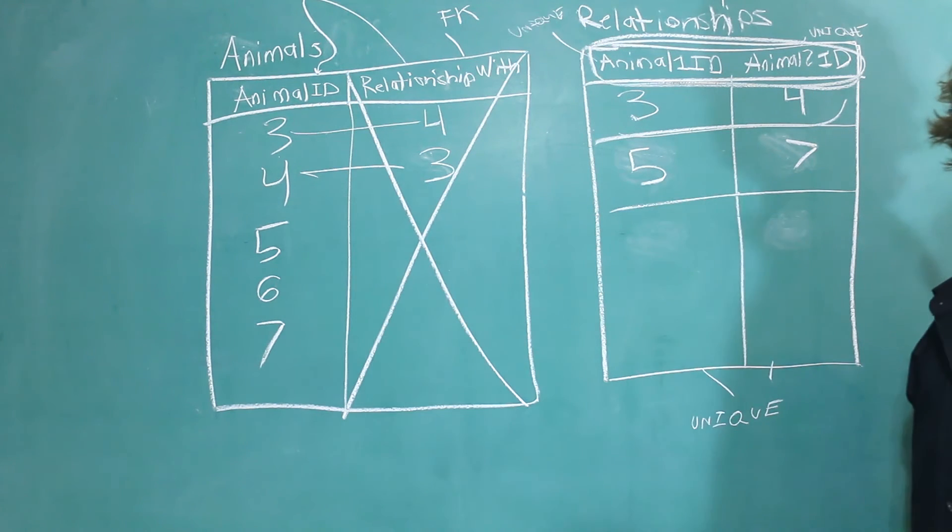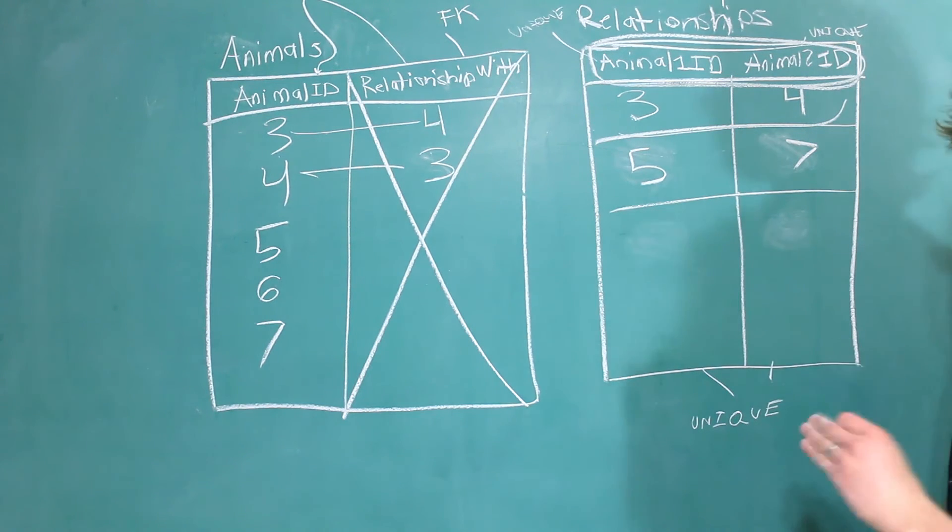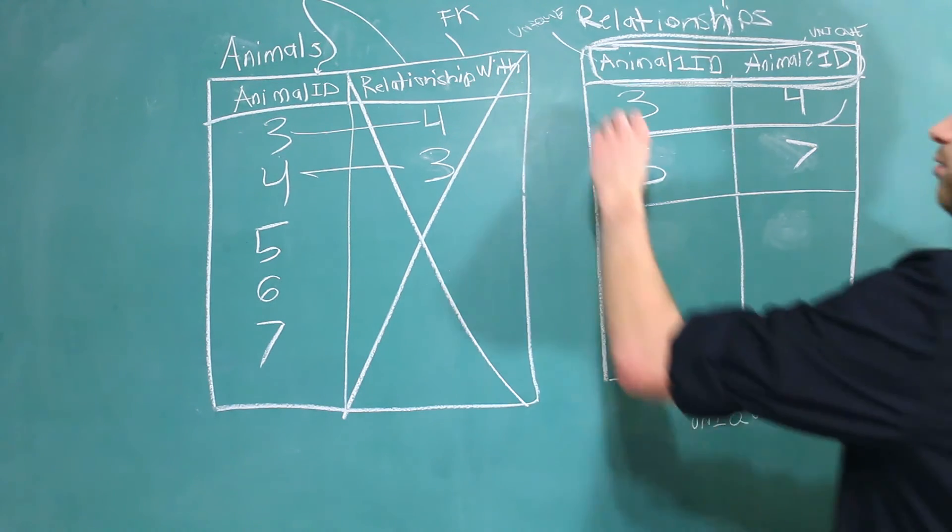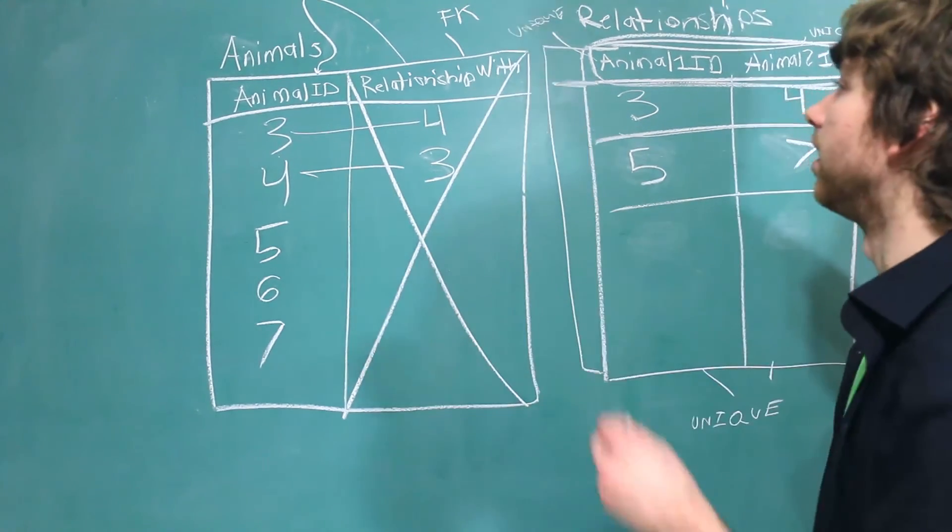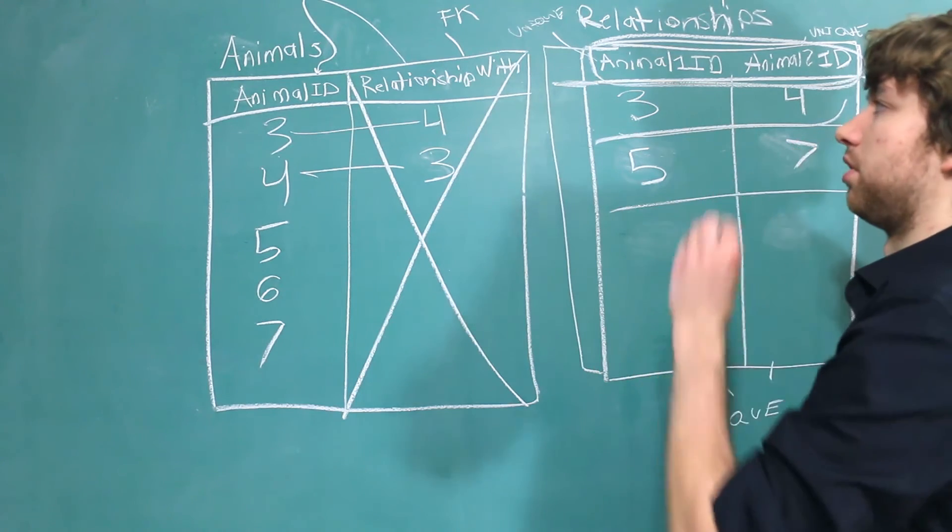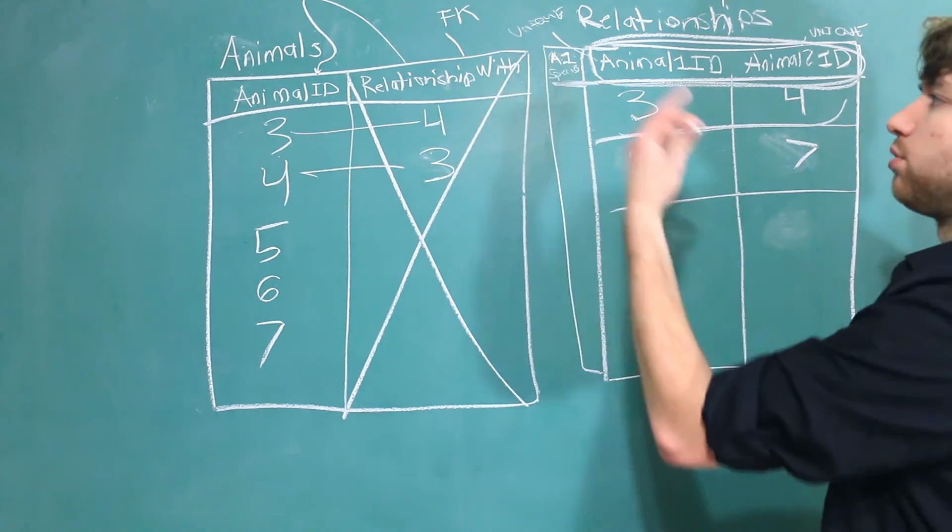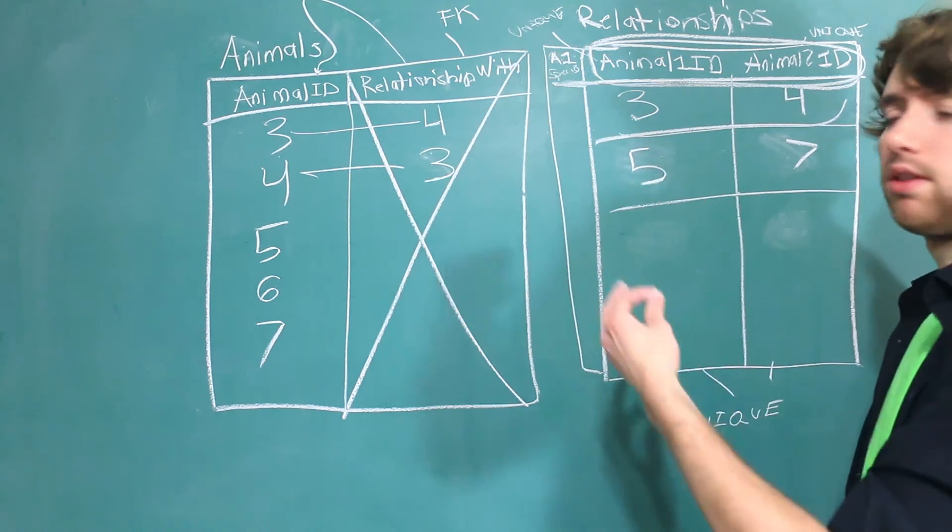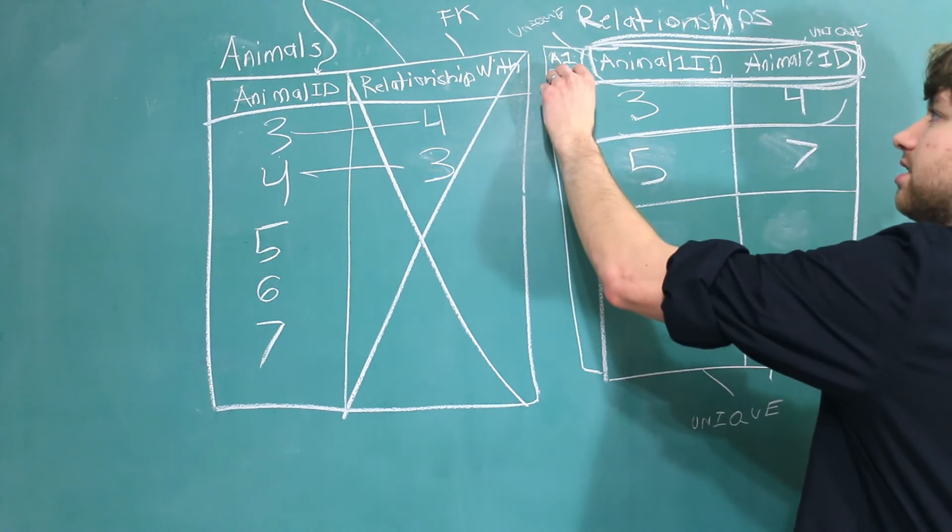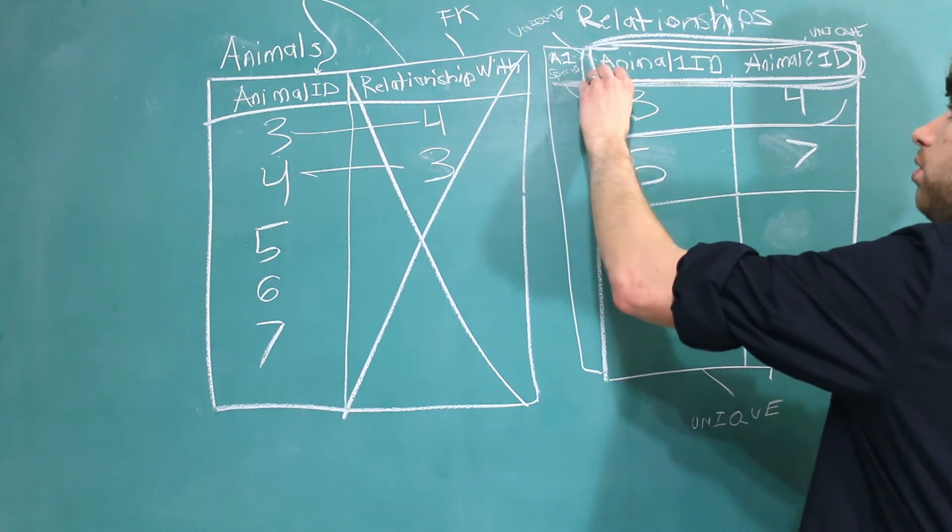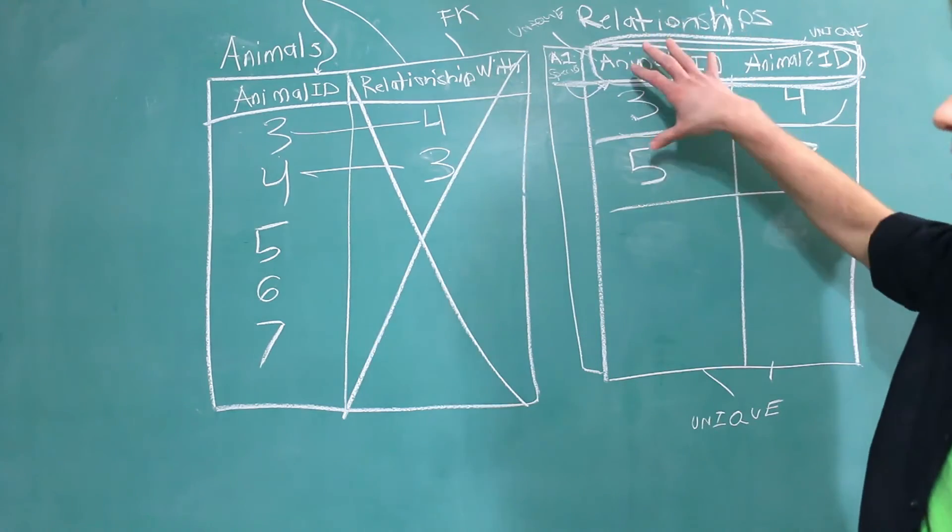So where does a partial dependency come in? A partial dependency in this situation would be any data describing the animal. For example, if we had a column here, running out of room, so it's going to be a really small column. And if there were any attributes describing one of the animals. So let's say we had animal one species. That's really good information to have in the database. The only thing is it doesn't belong in this table. That's because the A1 species is dependent only on animal one. That's because it's only describing one half of this table, the first animal.